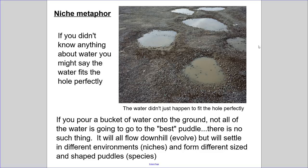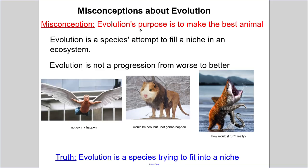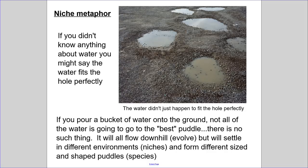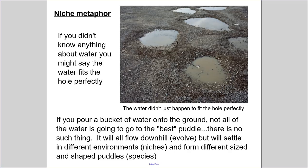You read the puddle metaphor yesterday, and it does a good job discussing this myth. If you think of water as something trying to evolve, and the way it flows as the process of evolution, all these little holes in the ground would create the 'best' puddle. But there's really no such thing as a best puddle — just a puddle that happens to fit the hole perfectly. Water poured into the ground will just flow downhill and settle in different environments. That's very much what evolution does — you're just trying to settle into an environment where you'll find stability.